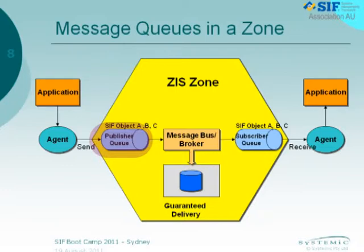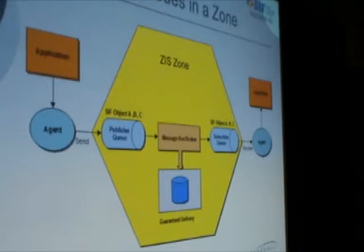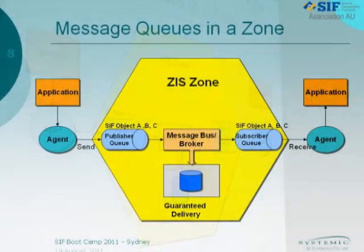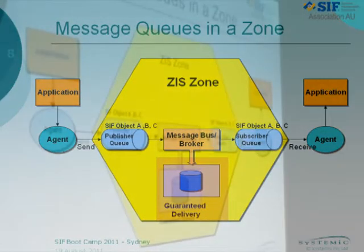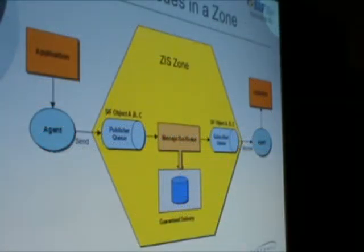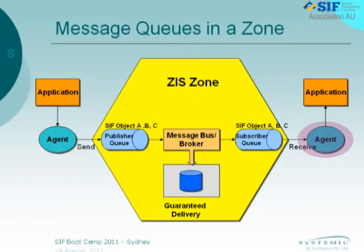He sends object ABC. The zone is responsible for guaranteed delivery, which means we generally persist the message. I make sure that when there's anyone on the other side ready for it, we'll deliver it. Until it's acknowledged, we won't throw it away, except in a service where you have timeouts — you can set timeouts on messages. That subscribing agent also has his queue.